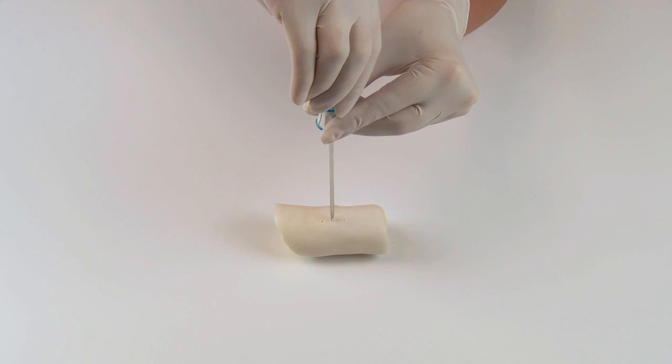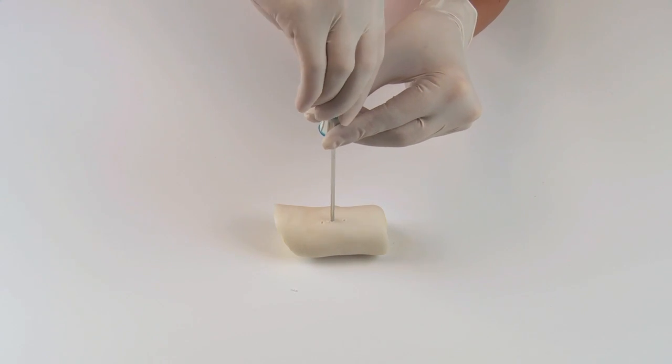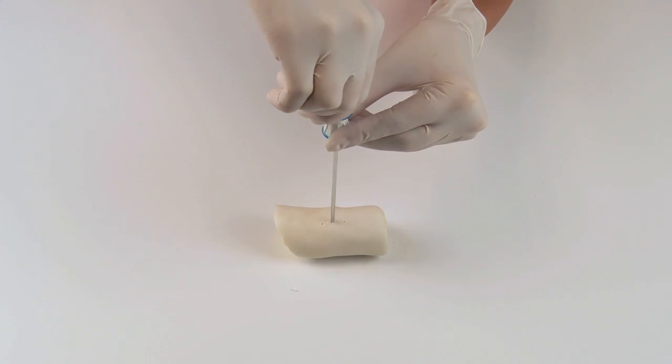Now continue to drill to the cortical bone. Use moderate axial pressure and as long turns as possible.